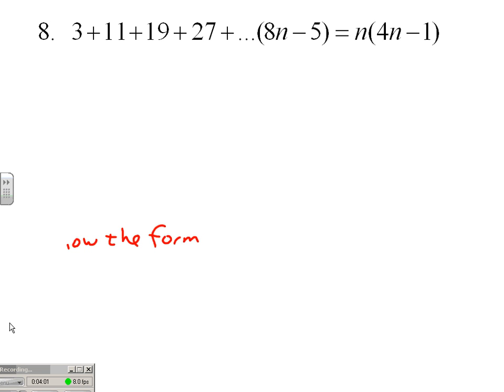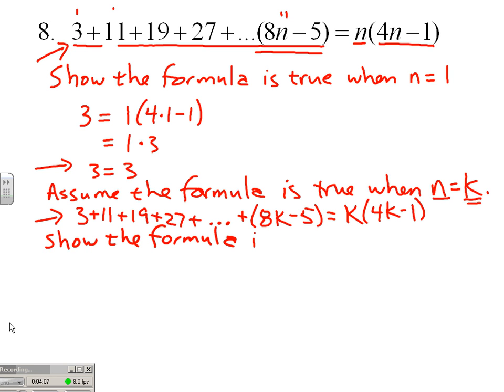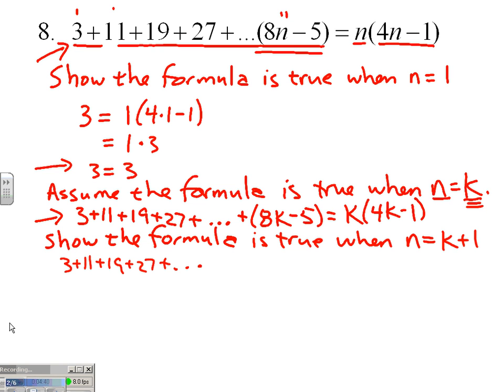So our formula with k plus 1 dominoes in it becomes this monster: 3 plus 11 plus 19 plus 27 plus dot dot dot. It's tempting to go right to my k plus first domino, but I'm going to revisit my kth domino.